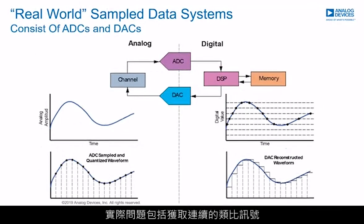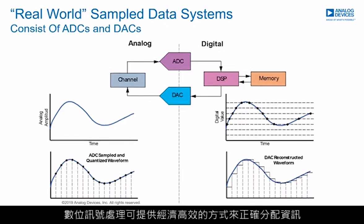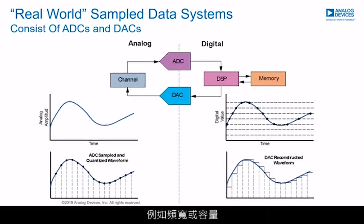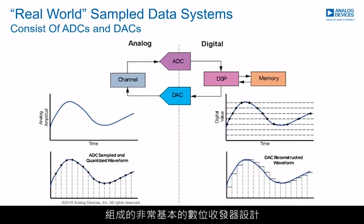The real-world problem consists of taking a continuous analog signal and applying decisions by means of digital signal processing to that signal. Digital signal processing allows for efficient and cost-effective means of allocating information correctly, such as bandwidth or capacity. Consider a very basic digital transceiver design, consisting of a receive path and a transmit path.